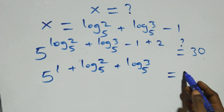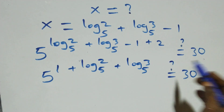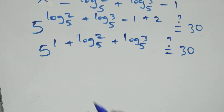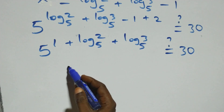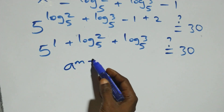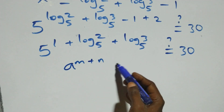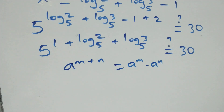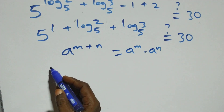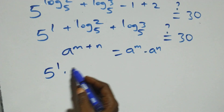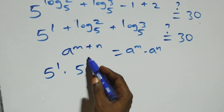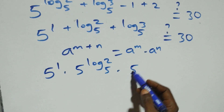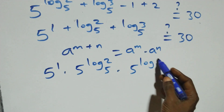Is it equals to 30 on this side? Then here we apply the law of indices when we have a raised to power n plus n, which is the same thing as a raised to power n times a raised to power n. At this here, this becomes 5 raised to power 1, times 5 raised to power log 2 base 5, times 5 raised to power log 3 base 5. Is it equals to 30 on this side?